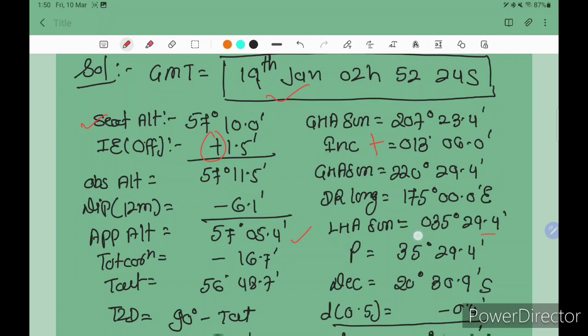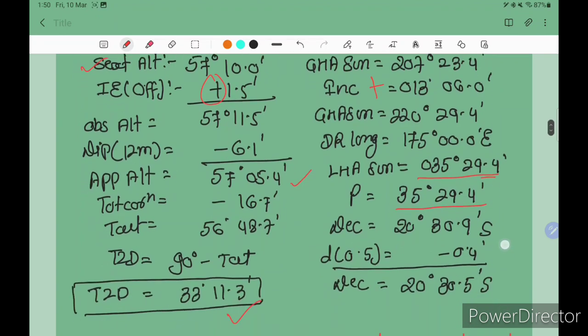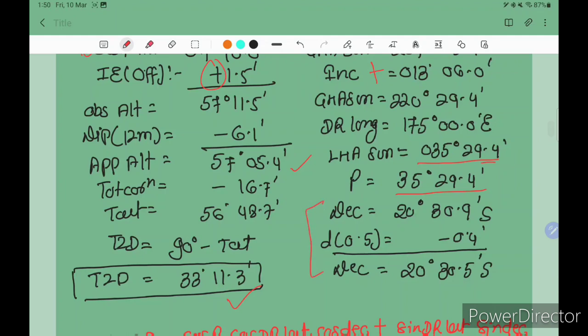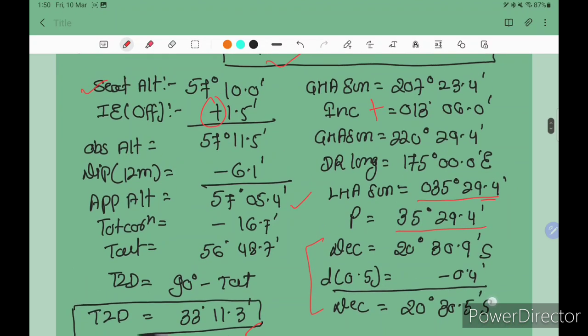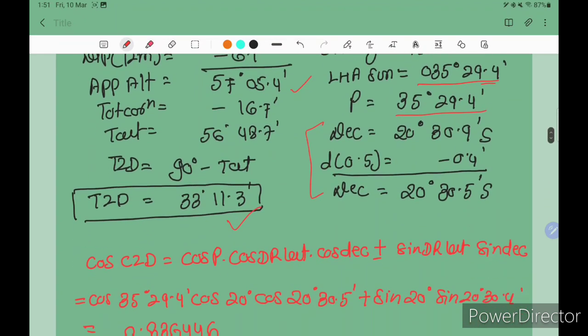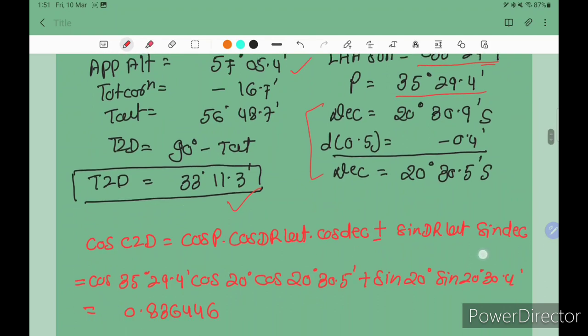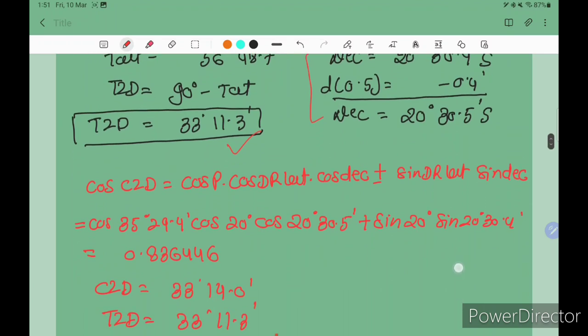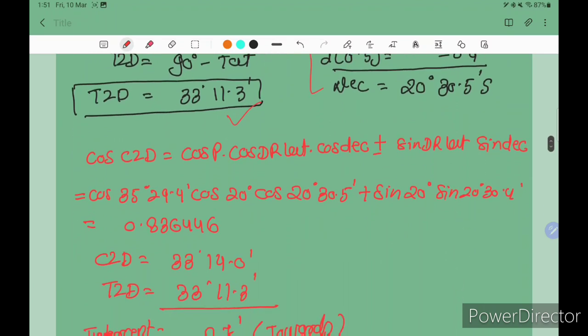If LHA is less than 180 degrees, P equals LHA, so LHA is also 35 degrees 29.4 minutes. You get this from the almanac. So far, this part is clear. If you have any difficulties, write me in the comment box or message me directly on The Sailor Ship group on WhatsApp, Facebook, or Twitter.